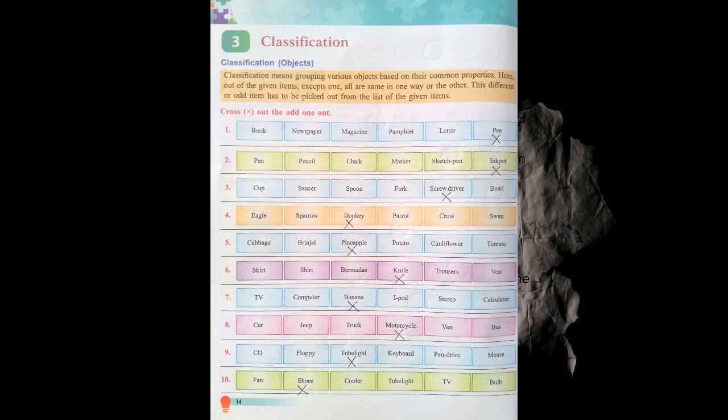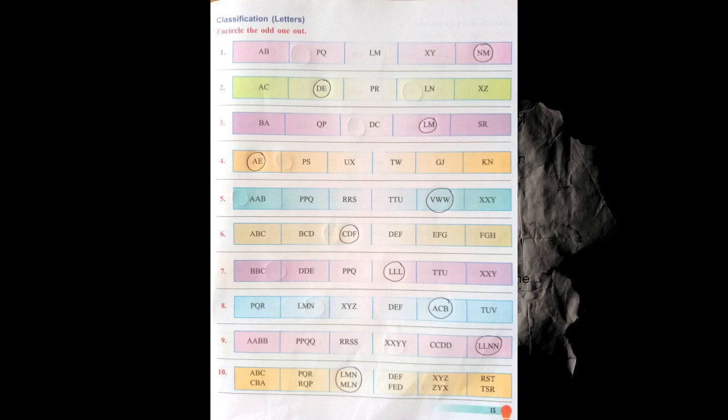Now nine: CD, floppy, tube light, keyboard, pen drive and mouse. Now students, take out page number 15 — Classification in Letters.